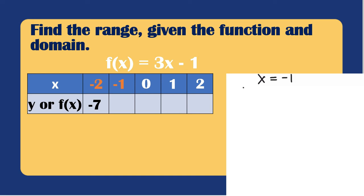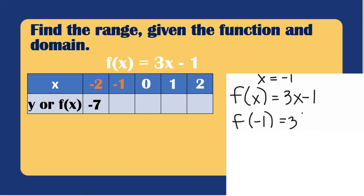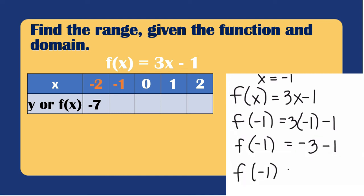If x = -1, substituting into f(x) = 3x − 1 gives f(-1) = 3(-1) − 1 = -3 − 1. Since both have the same sign, we add: 3 + 1 = 4 and copy the sign, so f(-1) = -4.